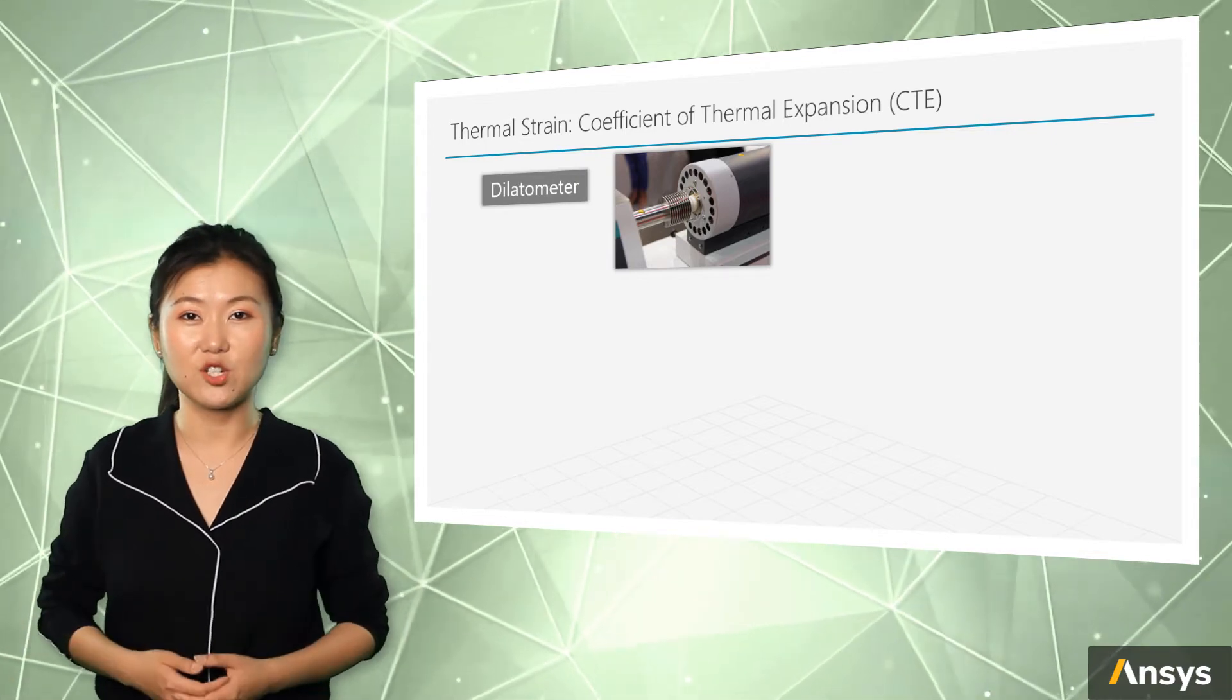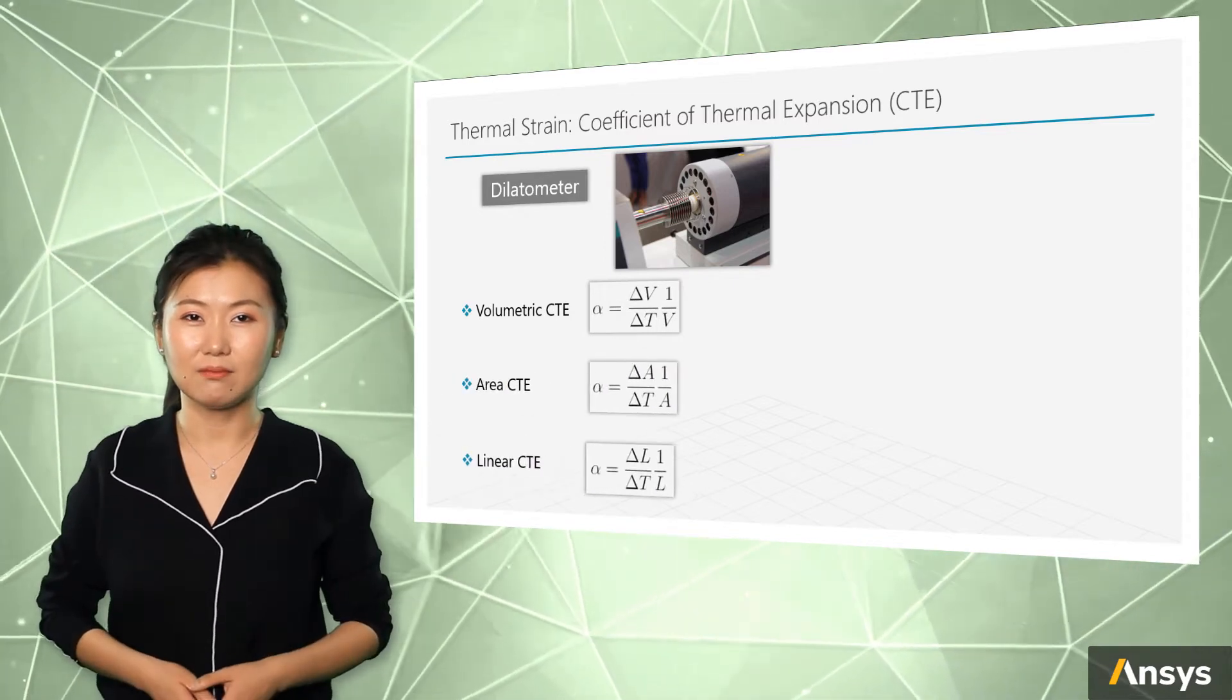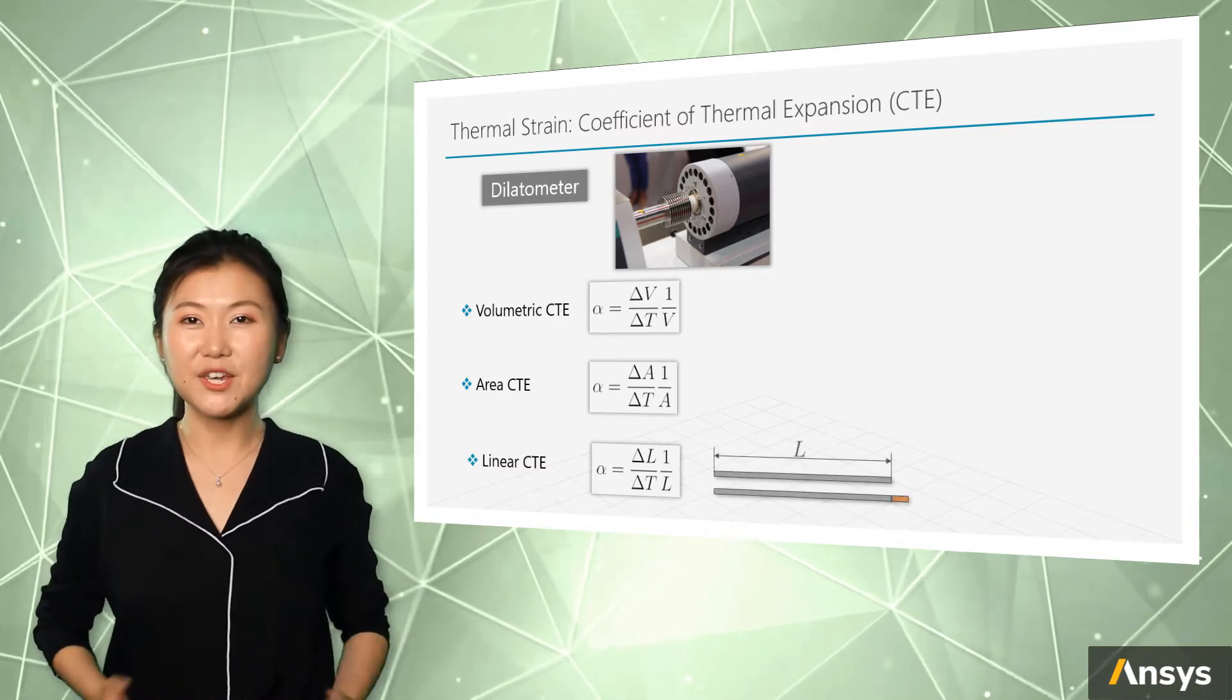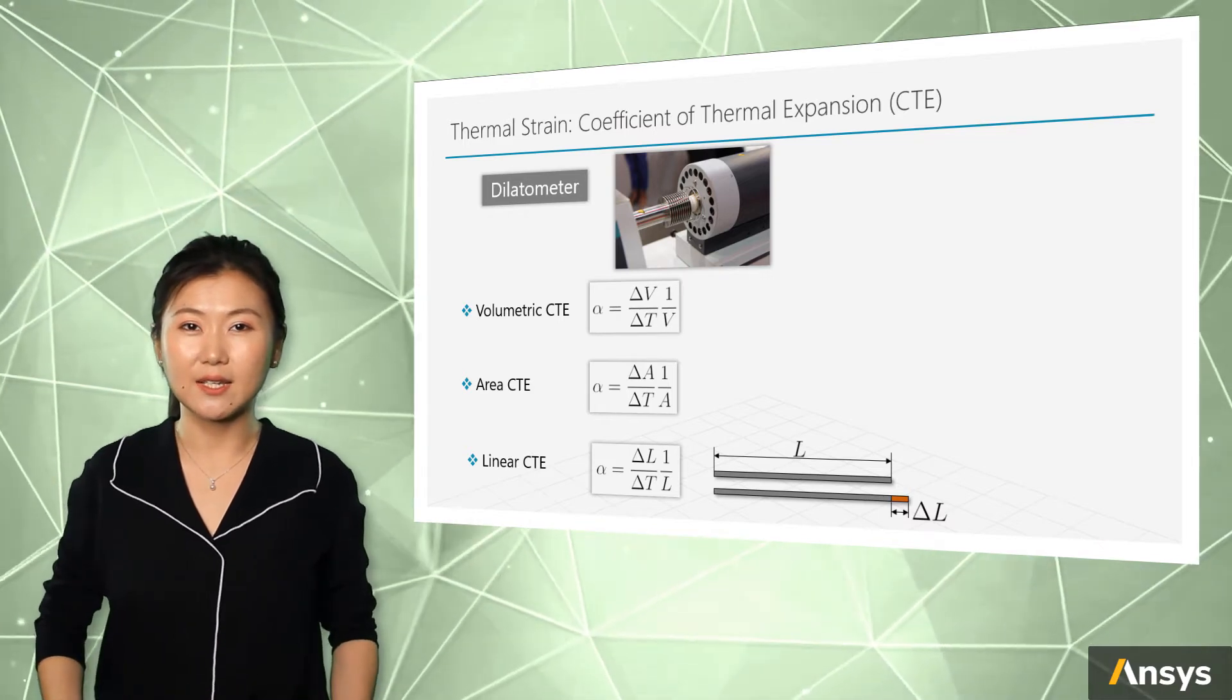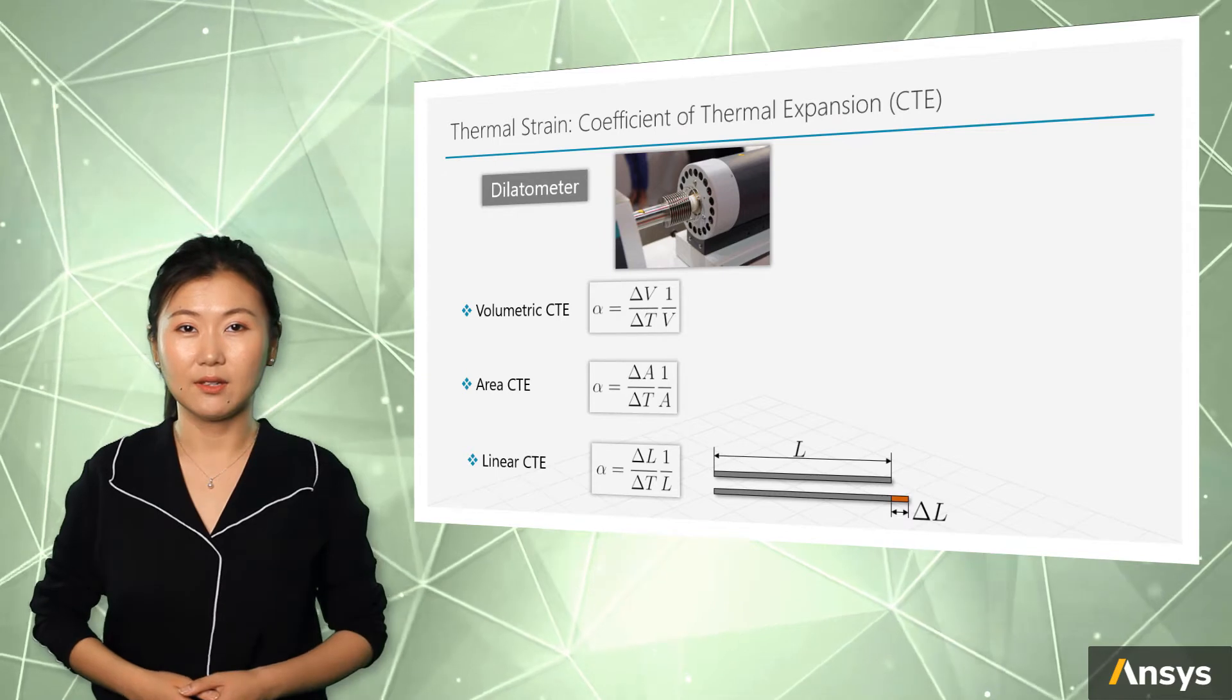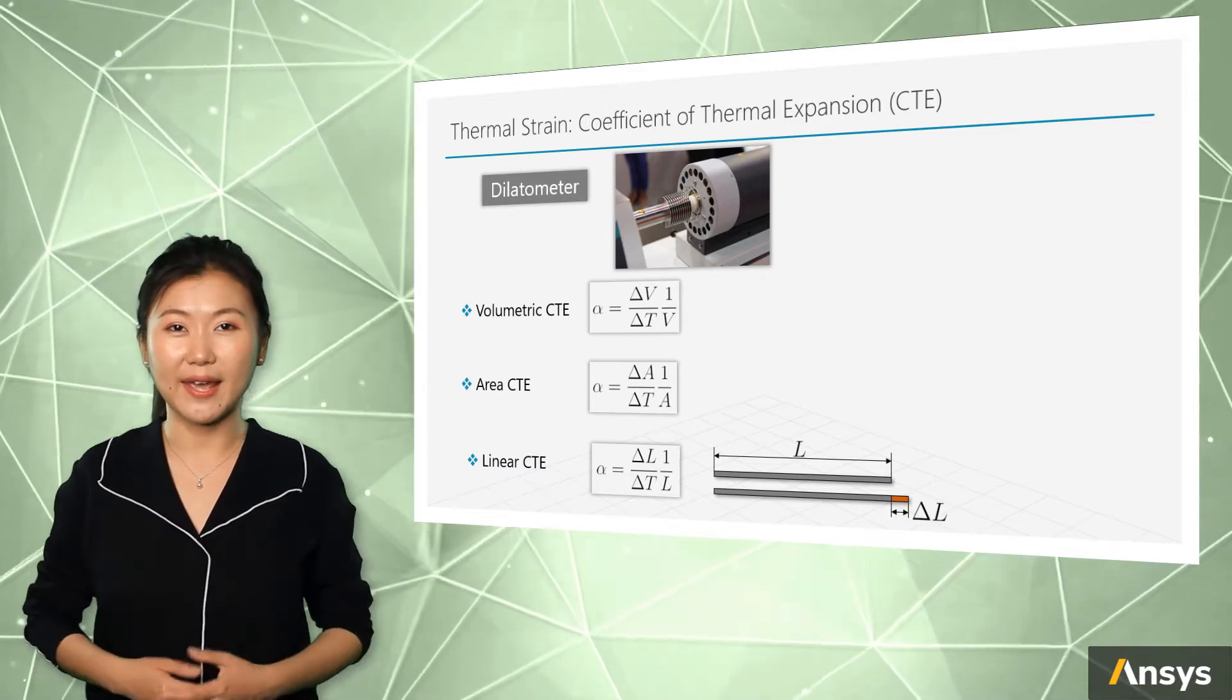There are several types of coefficient of thermal expansion: volumetric CTE, area CTE, and linear CTE. For example, for finding linear CTE, we can measure the change of length delta L for a specimen under a certain temperature change delta T and calculate the ratio of delta L and delta T, then divide the ratio by the original length of the specimen. Same thing for area and volumetric CTE.